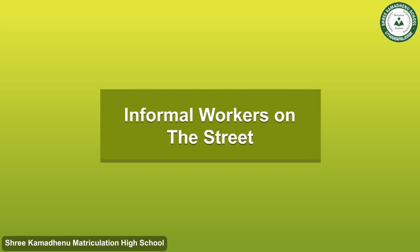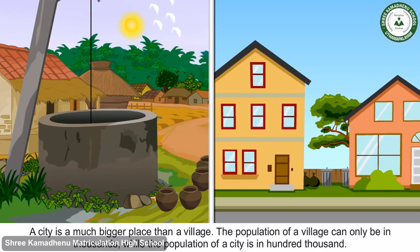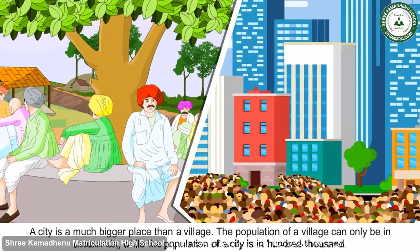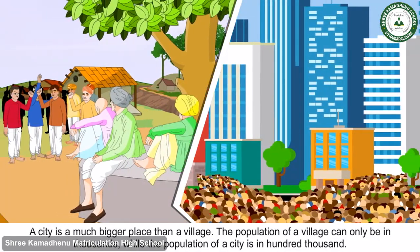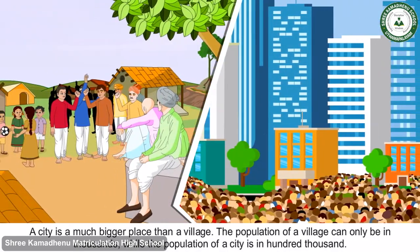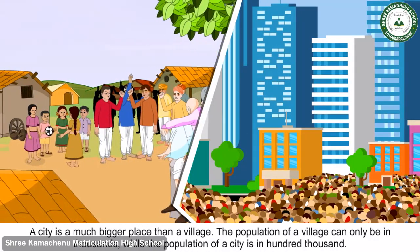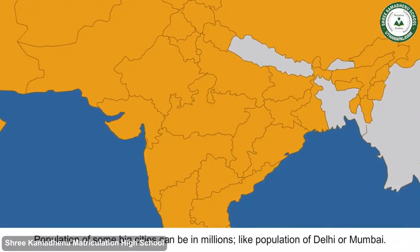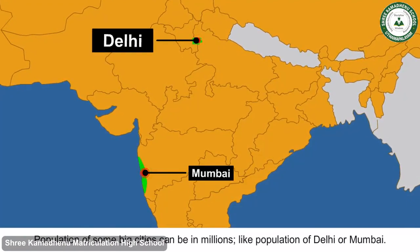A city is a much bigger place than a village. The population of a village can only be in thousands, while the population of a city is in hundreds of thousands. The population of some big cities can be in millions, like the population of Delhi or Mumbai.